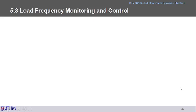We have explored section 5.1 on load monitoring and 5.2 on load voltage monitoring and control, with example 5.1 covering voltage variations. Voltage and frequency are two parameters we need to tightly monitor in the plant, especially in industrial environments, because they vary according to power. We have two types of power: active power P and reactive power Q.